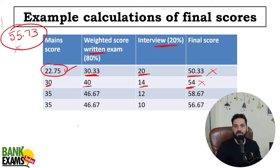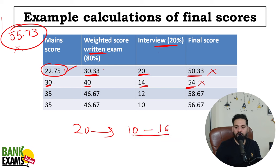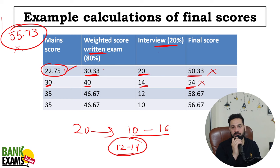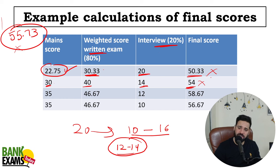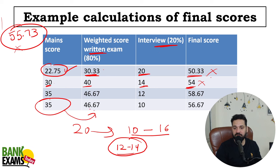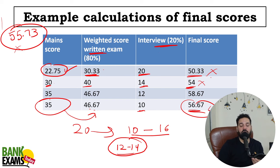Ek cheez ka dhyan rakhein — what I have noticed is that the average interview score out of 20, generally, aapko 10 se lekar 16 tak marks interview mein milte hain. On average, 12 se 14 marks jo hai, yeh sabse zyada average hai — mere 80% students ka interview ka score 12, 13, 14 hi hota hai. So assume karke chalein ki aapke 12 marks aayenge. Students, if you are able to score 35 marks, toh aapka weighted score ban gaya 46.67, aur interview mein chahe 10 marks lein — even then your score is 56.67 and you are able to crack the cut-off.